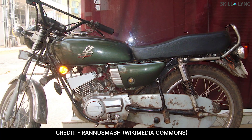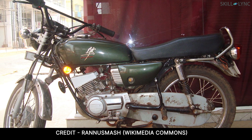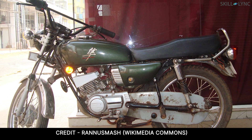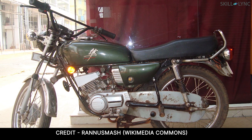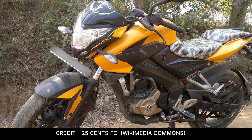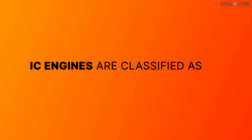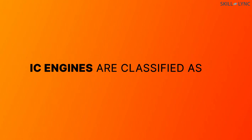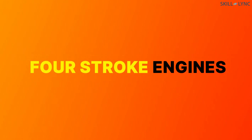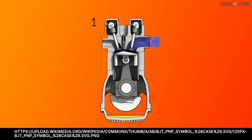You must have seen how the engines of old motorcycles like the RX100 and the new ones work differently. These motorcycles catch speed faster than old cars. Why does it happen? One of the reasons is the different cycles of operation on which both engines operate. On this basis, IC engines are classified as four-stroke engines and two-stroke engines.